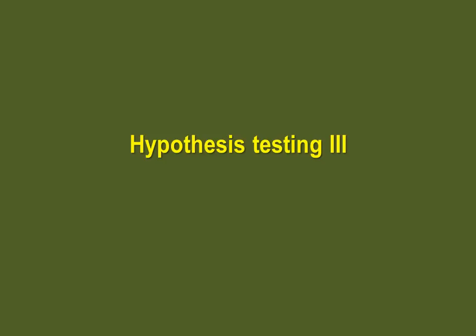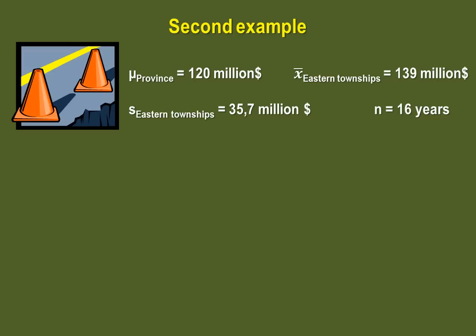This video will conclude hypothesis testing with a second example and an example for you to do on your own. The average investments in road building for all of the regions in Quebec is $120 million. The eastern townships received on average in the last 16 years $139 million. Is this amount significantly different than the amount received by the other provinces?